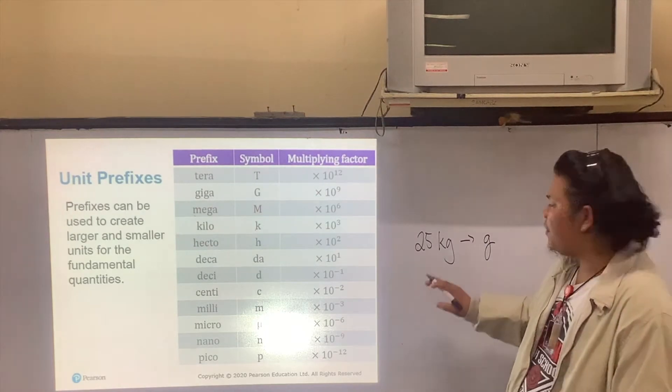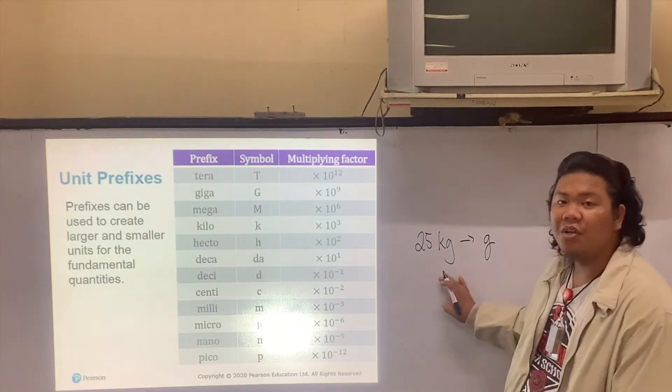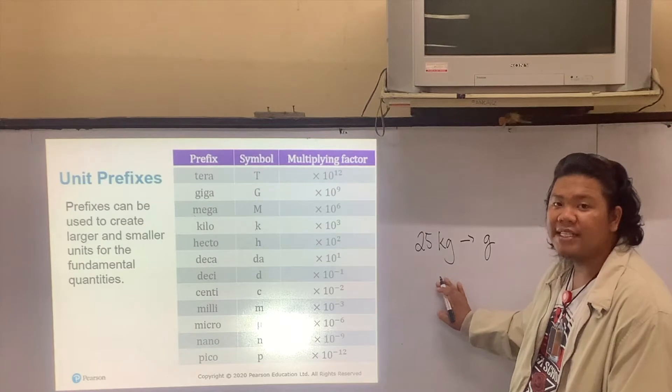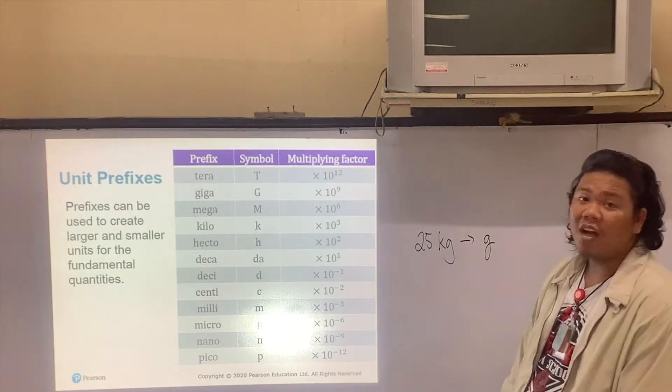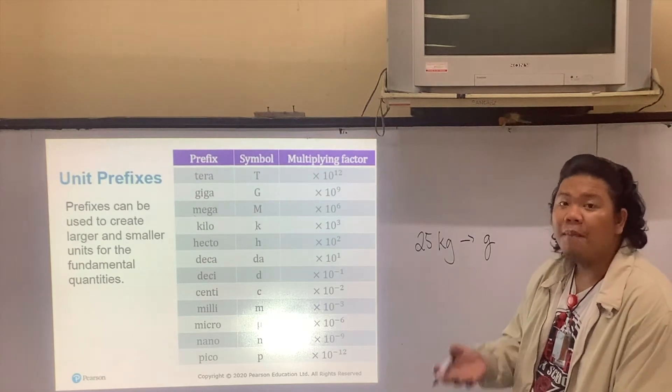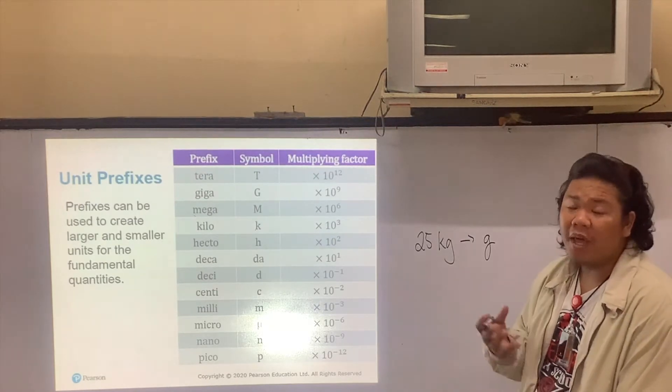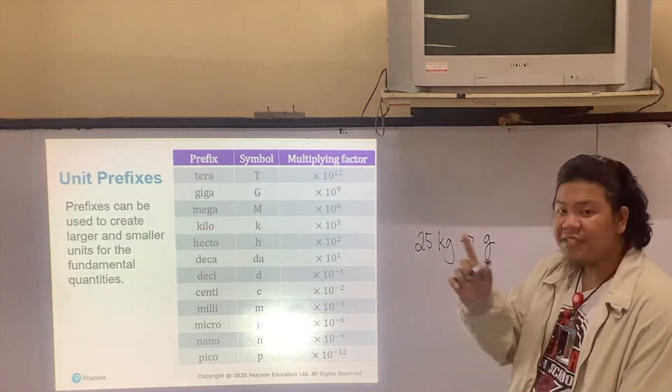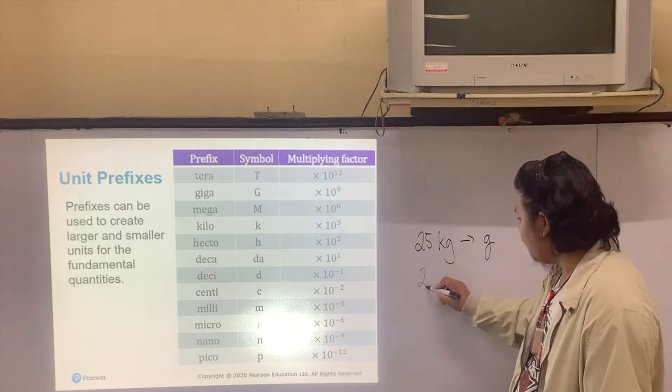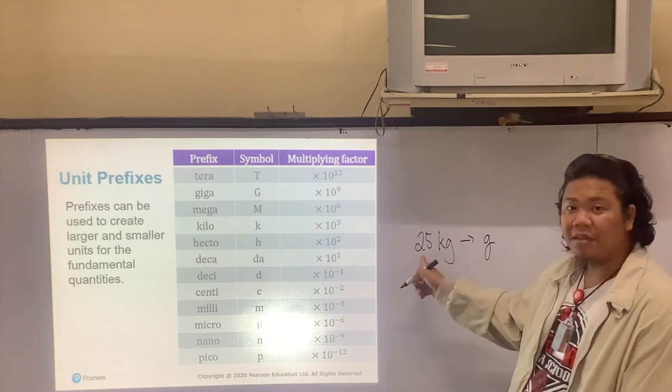Let's take, for example, you have 25 kilograms and you wish to convert this into grams. Of course, you may still use the conversion factors that Muncheska discussed, but there's also an easier way to solve this faster. The first step is to write 25 kilograms and copy the base number.